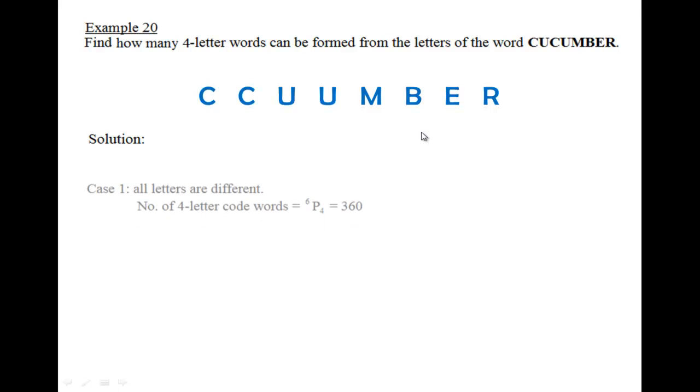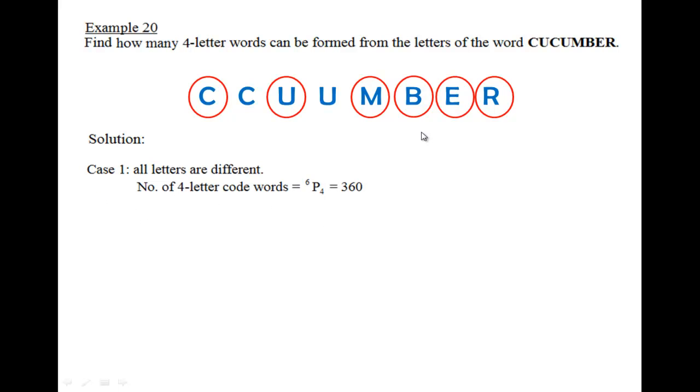One of which is all letters are different. So having six letters here, if I want to form a four-letter word and all the letters are different, essentially the number of ways we can do that would be 6P4, which is equivalent to 360.